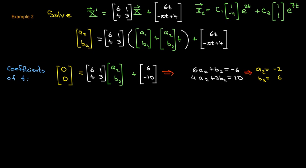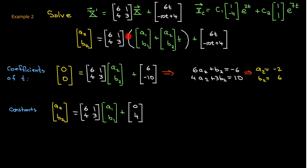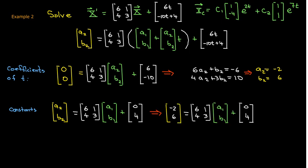So let's look at the constants now. On the left hand side, I have the constant vector a2b2. And now I know what a2 and b2 are. So I can make that substitution. And then I have the coefficient matrix times a1b1. That's a constant. And then from the f vector, I have a 0 from the first component and a plus 4 from the second component. So let's go ahead and put in our values for a2 and b2.